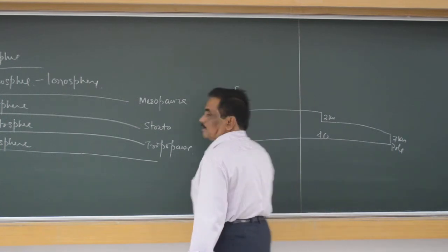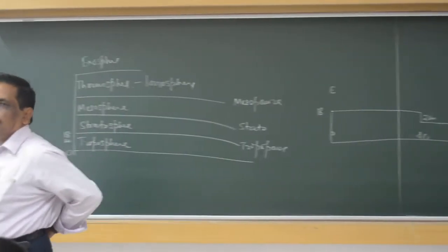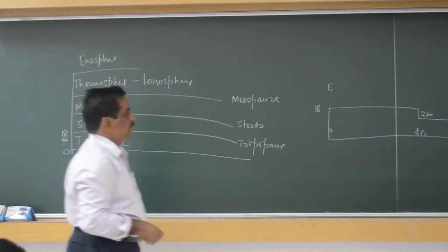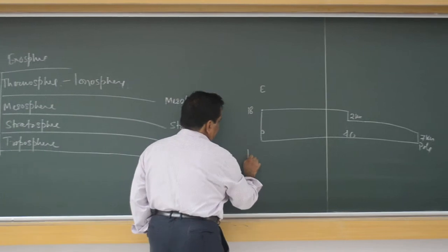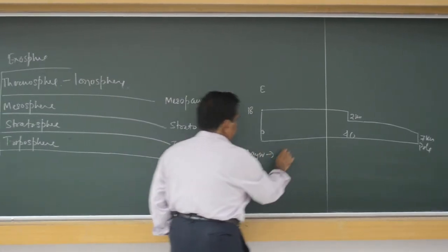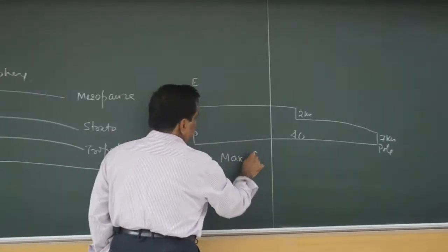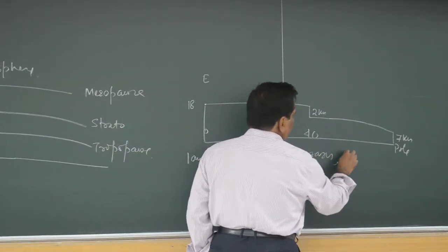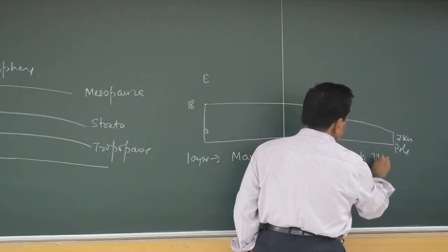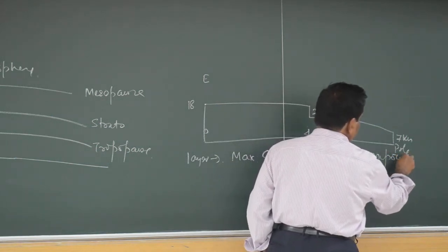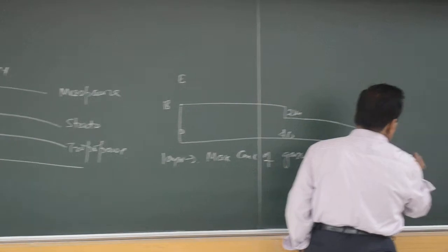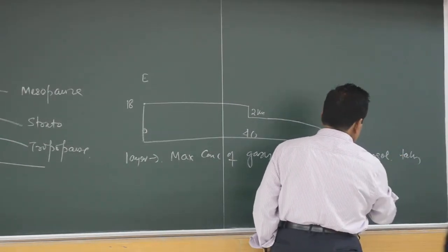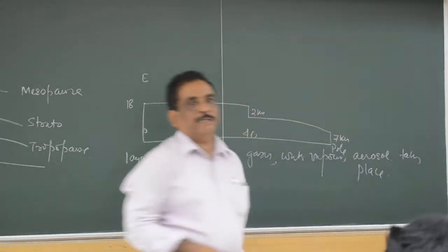Like this — it is a sloping surface. I am talking about the troposphere. So the troposphere is the layer where there is a maximum concentration of gases, water vapor, and aerosols — maximum concentration.